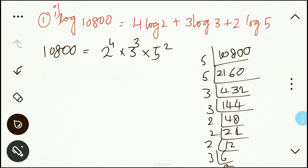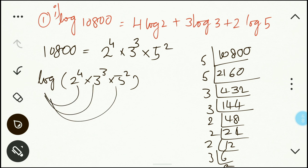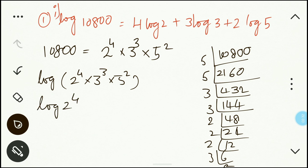Instead of 10800 in the question, I'm going to substitute its prime factorization. So it becomes log(2⁴ × 3³ × 5²). Now I'm going to write each factor separately using the product law of logarithms — when there is multiplication inside a log, it becomes addition. So we get log 2⁴ plus log 3³ plus log 5².